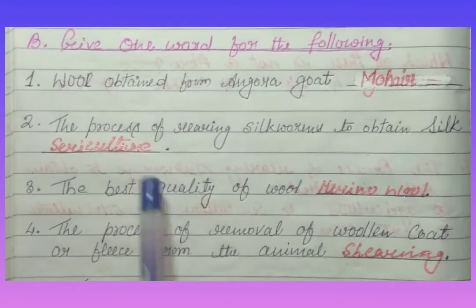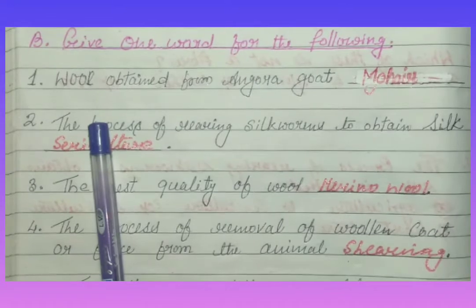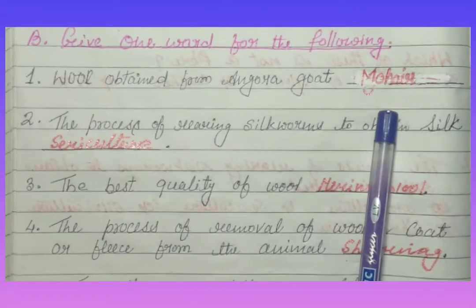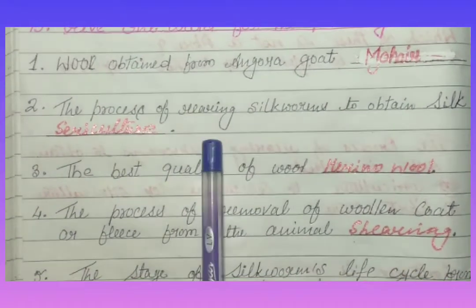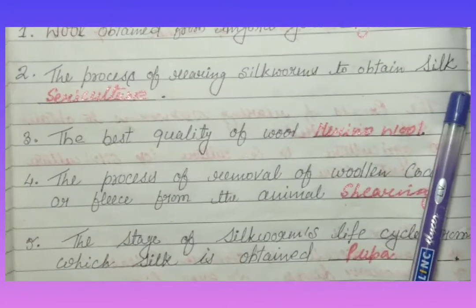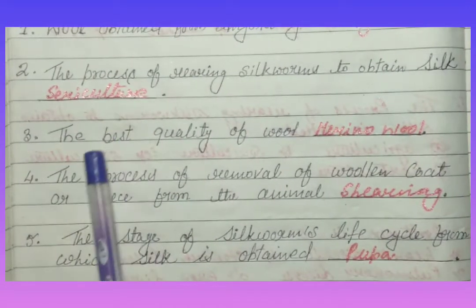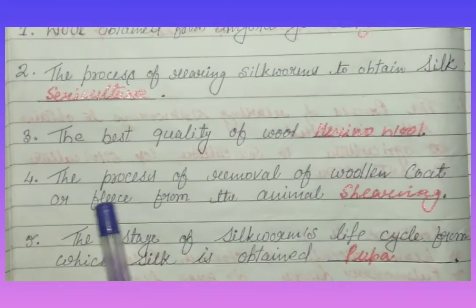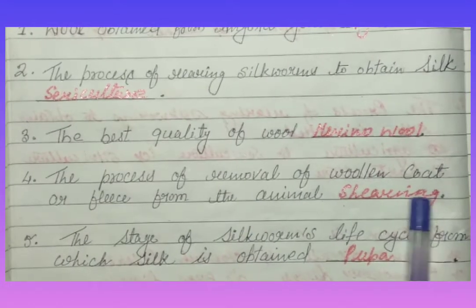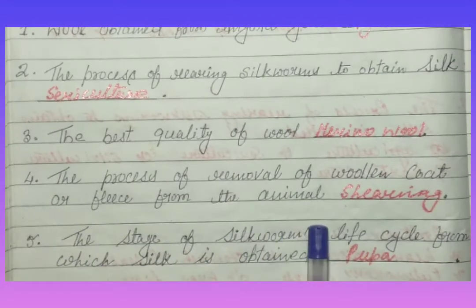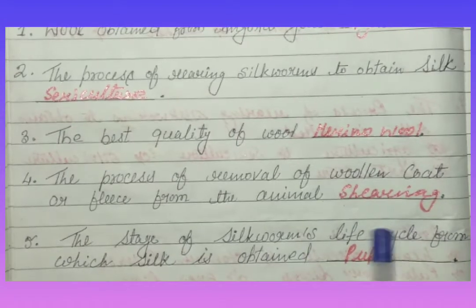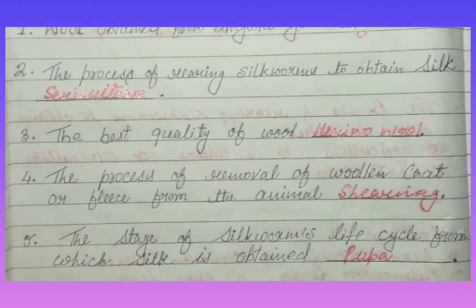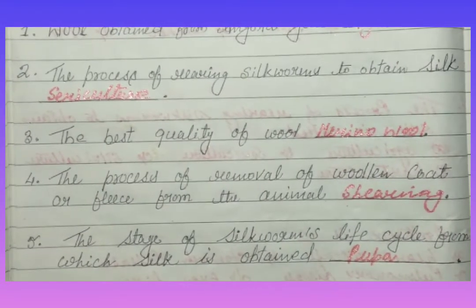Give one word for the following. Wool obtained from angora goat: the answer is mohair. The process of rearing silkworms to obtain silk: sericulture. The best quality of wool: merino wool. The process of removal of wool coat or fleece from the animal: shearing. The stage of silkworm's life cycle from which silk is obtained: pupa.